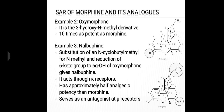The third example is nalbuphine. There are two structural changes in comparison to oxymorphone: first, the presence of a 6-alpha hydroxyl group at the sixth position, and second, the presence of an N-cyclobutylmethyl moiety instead of an N-methyl moiety. Nalbuphine acts through kappa receptors, has approximately half the analgesic potency of morphine, and serves as an antagonist at mu receptors.